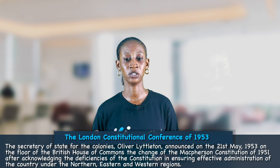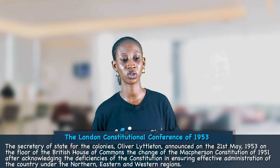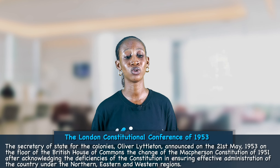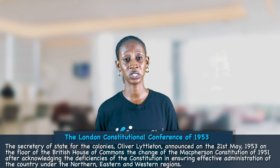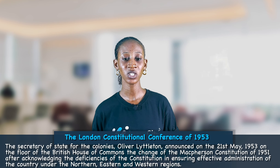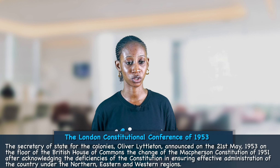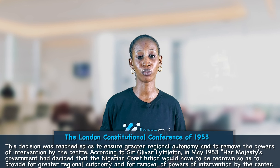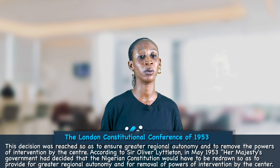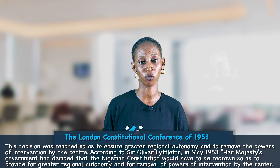The conference acknowledged the deficiencies in McPherson's Constitution — that it was not effective enough in the administration of the country under the three regions: the Northern, the Western, and the Eastern Region. The change from McPherson's Constitution to Lyttleton's Constitution was decided so as to ensure greater regional autonomy and to remove the powers of intervention by the federal or central government.